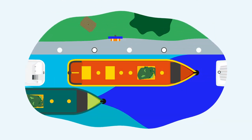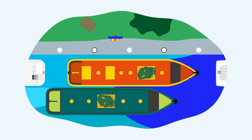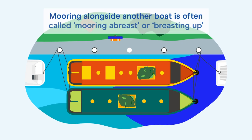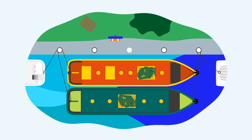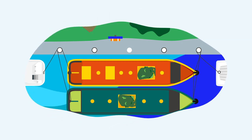In busy areas, you might have to double moor against another boat. It's always best to get permission of the other boat owner before doing so. If you do moor alongside another boat and have to leave your boat, make sure you leave your phone number so the other boater can get in touch if they need to.